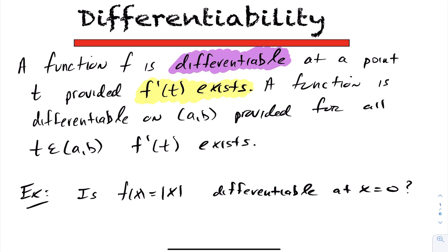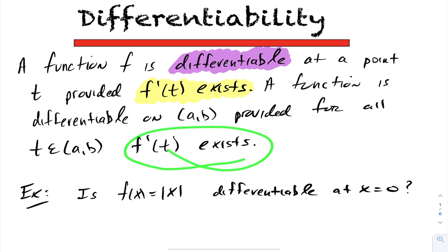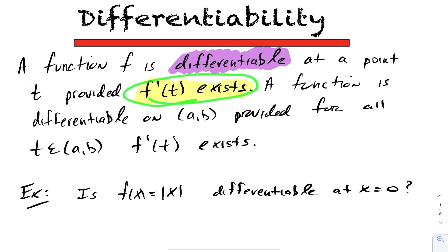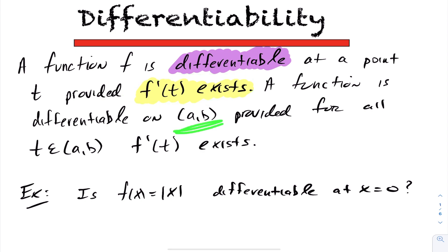A function is differentiable on an interval — suppose that interval is (a, b) — provided for every element in that interval, f' at t exists. So differentiability, much like continuity, is defined point-wise. A function is differentiable at a particular point if that derivative at that point exists, and you would say a function is differentiable on the entire interval provided that derivative exists at every particular point you've chosen.